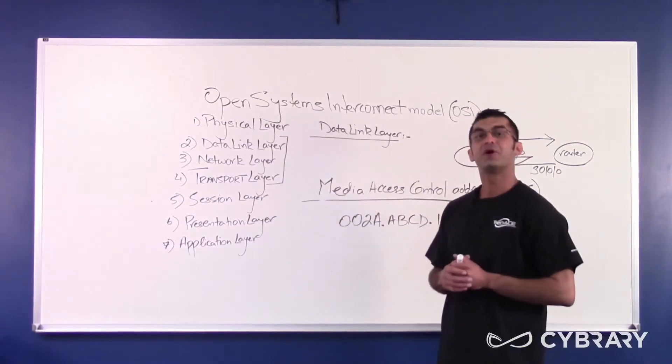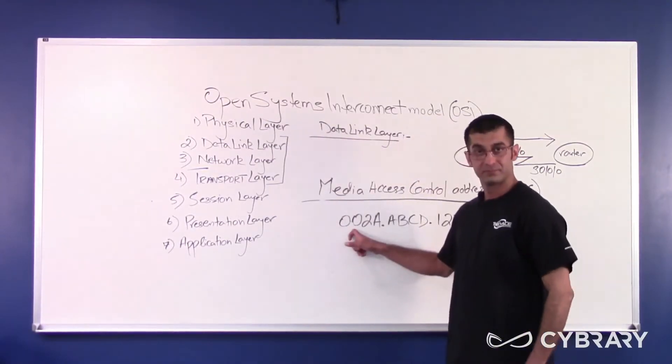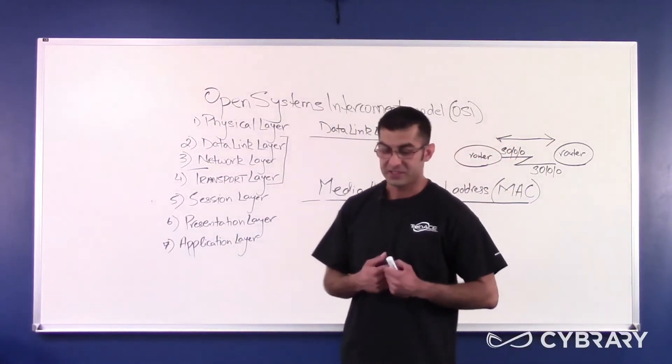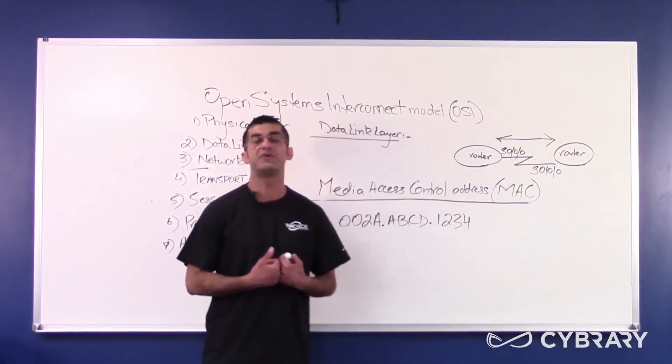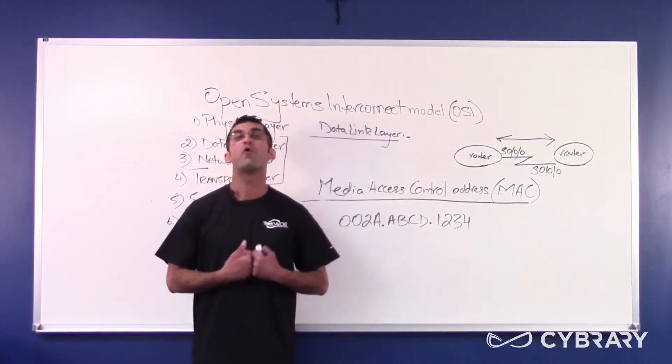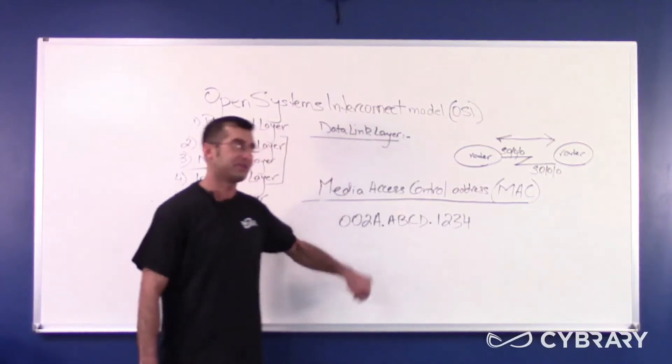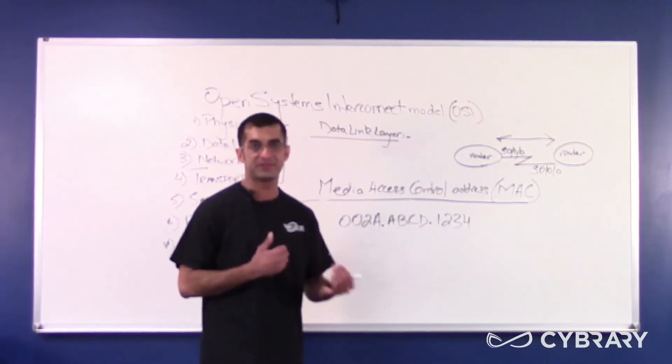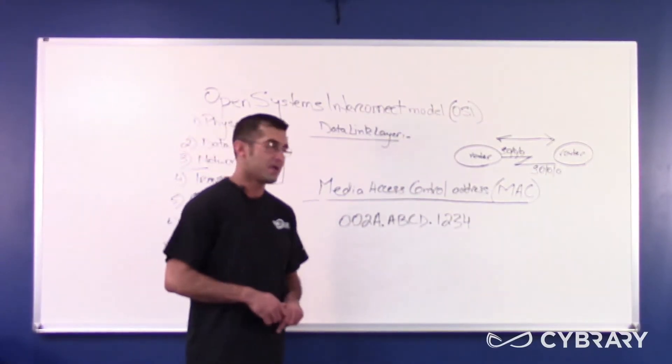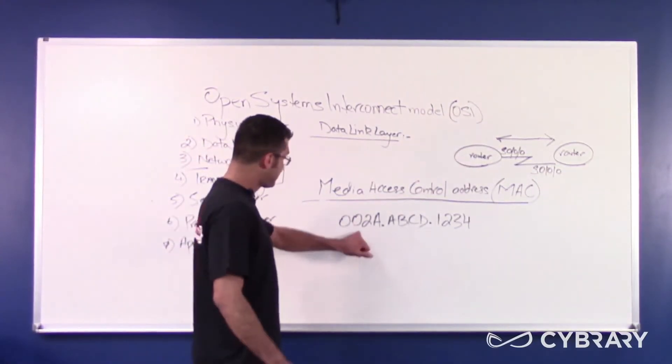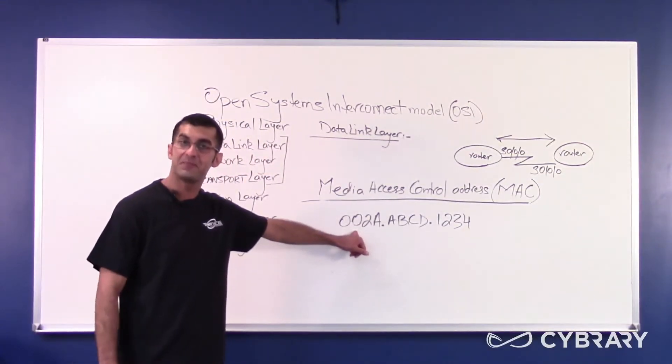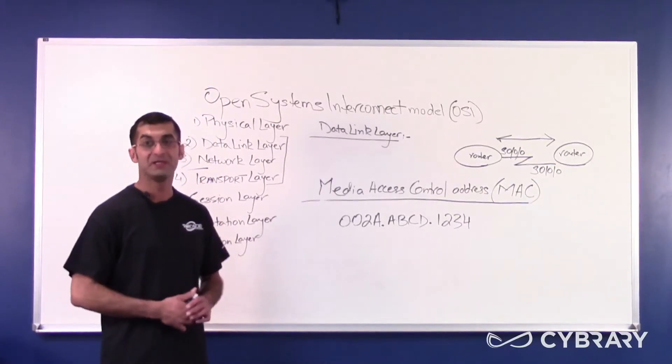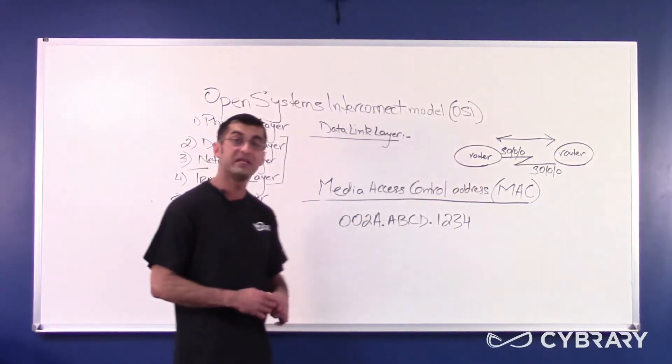If that bit is turned off, which it is over here, it means that this MAC address is universally unique. There won't be another MAC address like this in theory. Sometimes you run across MAC addresses that are the same, but it doesn't happen often. But in theory, if this bit is turned off, the seventh most significant bit is turned off, it means that this MAC address should be universally unique.